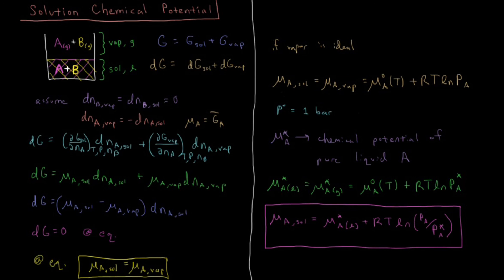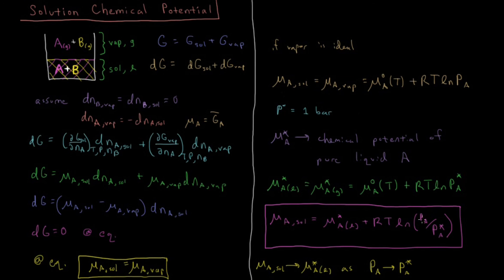This means the chemical potential of A in solution approaches the chemical potential of pure liquid A as P_A approaches P_A*: when P_A equals P_A*, mu_A equals mu_A*. If vapor concentrations are high enough for non-ideal behavior, we can replace pressures with fugacities. However, vapor pressures are generally quite low — well below one bar — and gases up to one bar behave close to ideally, so treating these as ideal vapors is generally valid. If needed, fugacities can replace pressures for non-ideal cases.